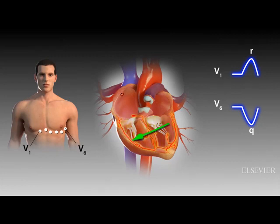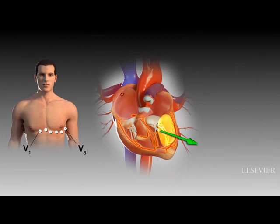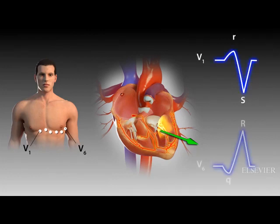The second phase of ventricular stimulation is the spread of stimulation to the left ventricle, resulting in a negative deflection in the right precordial leads and a positive deflection in the left precordial leads. Lead V1 shows a deep negative S wave and lead V6 displays a tall positive R wave.